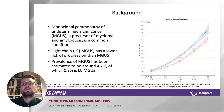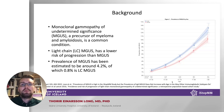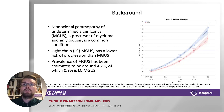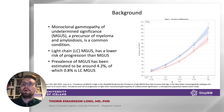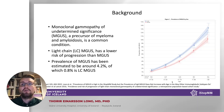Monoclonal gammopathy of undetermined significance, or MGUS, is the precursor to multiple myeloma and related lymphoproliferative disorders and it affects around 4.2% of the general population over the age of 50. It is characterized by the presence of monoclonal immunoglobulins on serum protein electrophoresis, immunofixation, or elevated free light chains with an abnormal FLC ratio without the presence of underlying multiple myeloma or other lymphoproliferative disease. Light chain MGUS is often discussed as a separate entity, as it has been shown to have lower risk of progression than other MGUS.